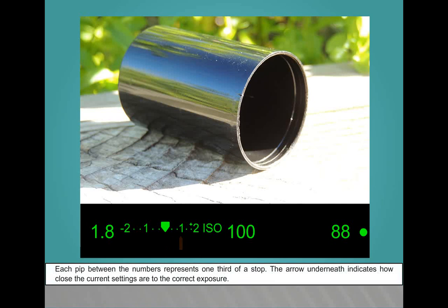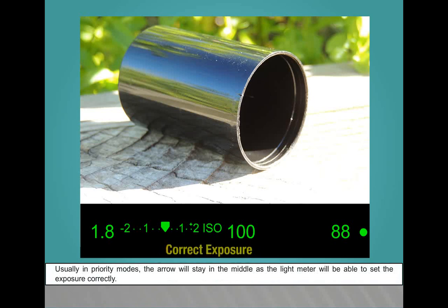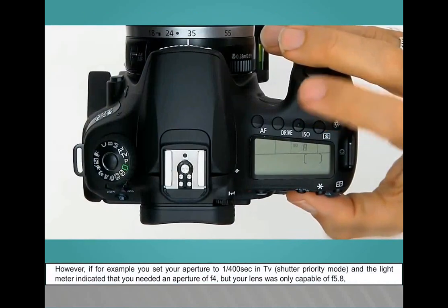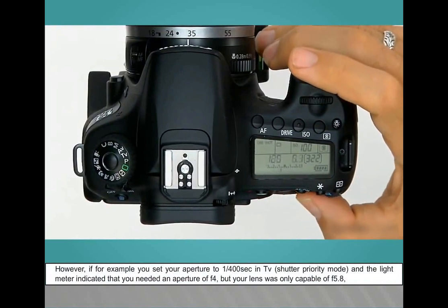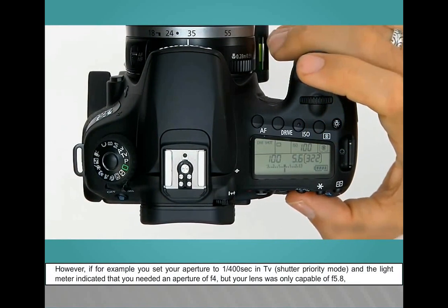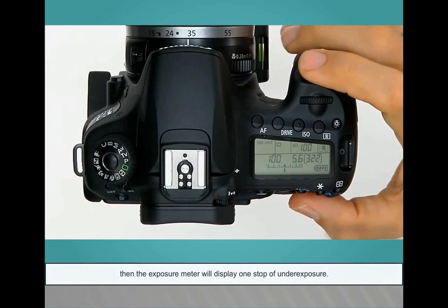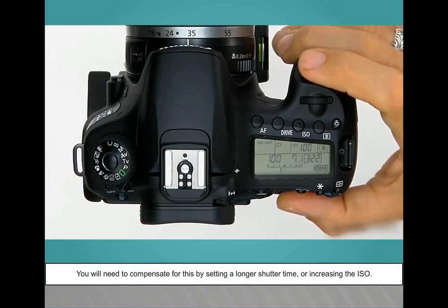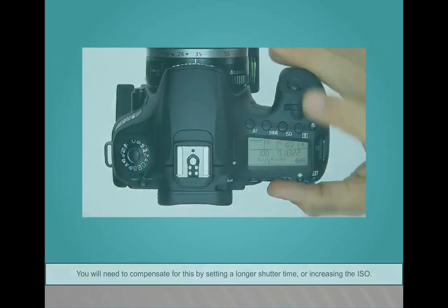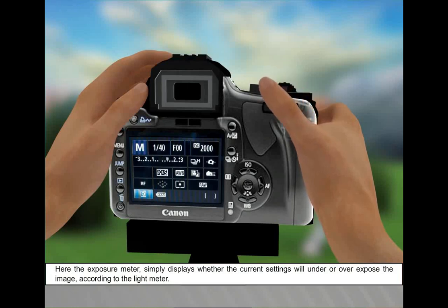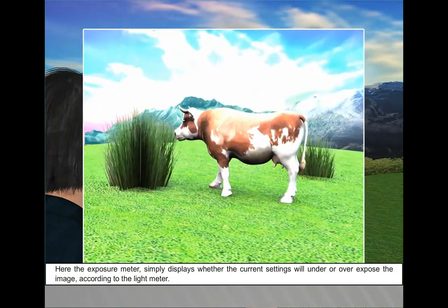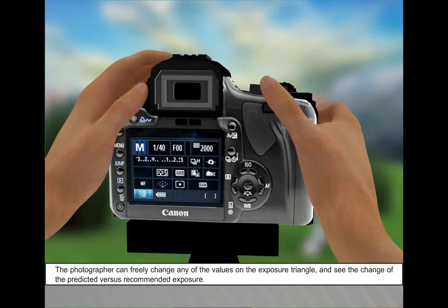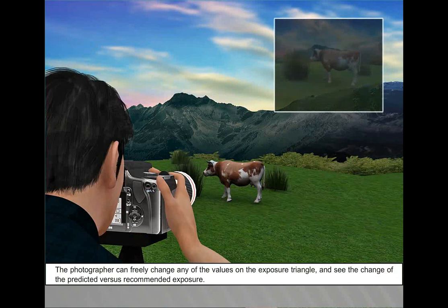The arrow underneath indicates how close the current settings are to the correct exposure. If, for example, you set your aperture to 1/400 second in TV shutter priority mode and the light meter indicated you needed an aperture of f/4 but your lens was only capable of f/5.8, then the exposure meter will display one stop of underexposure. You will need to compensate by setting a longer shutter time or increasing the ISO. The exposure meter simply displays whether the current settings will under or overexpose the image, and the photographer can freely change any of the values of the exposure triangle to see the change of the predicted versus recommended exposure.